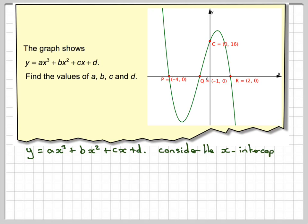If you consider the x-intercepts, that's going to be minus 4, minus 1, and 2 in this case, we can make up our equation by saying that y equals a, and we'll think about finding a at the end.